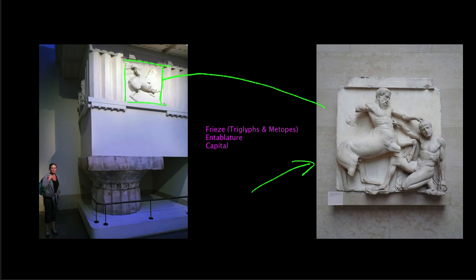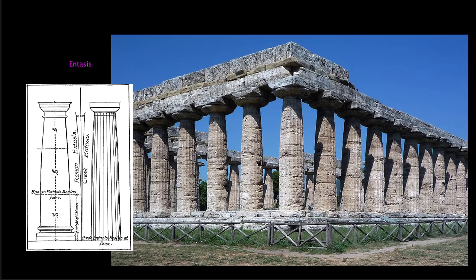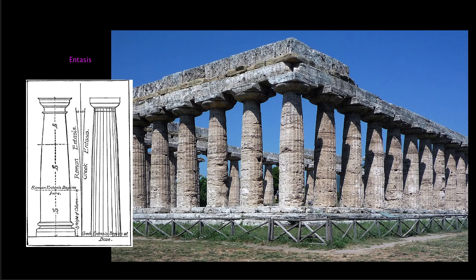One last element found in Doric architecture is entasis. Most people assume a column is straight up and down — that the sides are parallel and the base is as wide as the area below the capital — but the ancient Greeks didn't build their temples that way. When we look at an ancient Doric temple, the shafts swell a little bit toward the center: about a third of the way down is the widest point, tapering slightly toward the bottom and much more toward the top, so the narrowest point is right at the top.